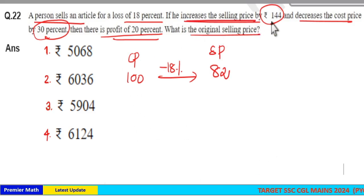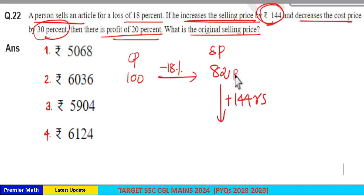If he increases the selling price by Rs. 144, don't add this Rs. 144 to this 82 part. This is 82 part. We got this 82 part from this 100 part, which is an assumption.